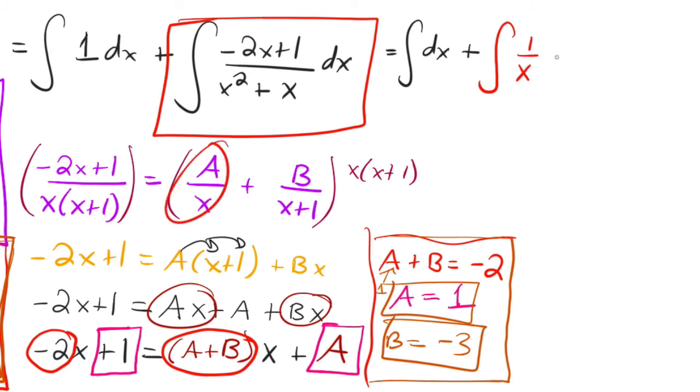And then, plus b over x plus 1. So b is negative 3. So I'm going to write it as negative 3 times the integral of 1 over x plus 1. And don't forget your dx's.